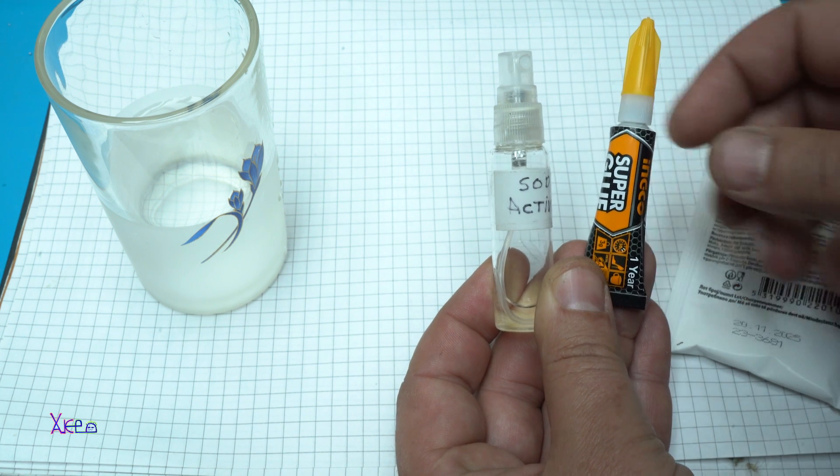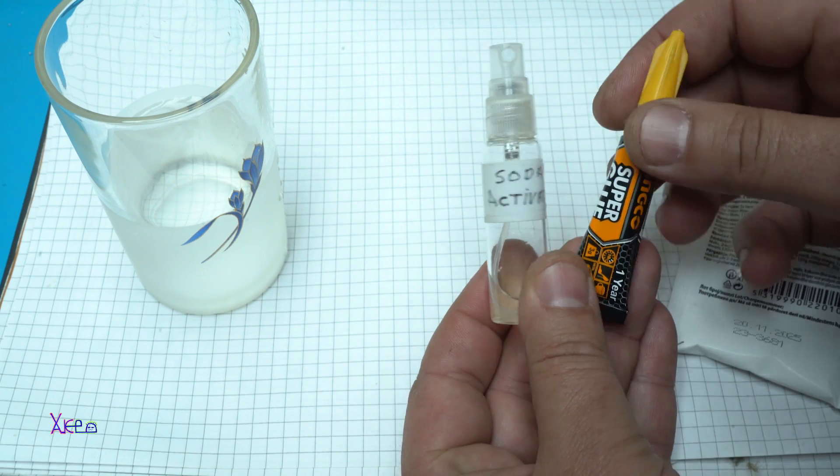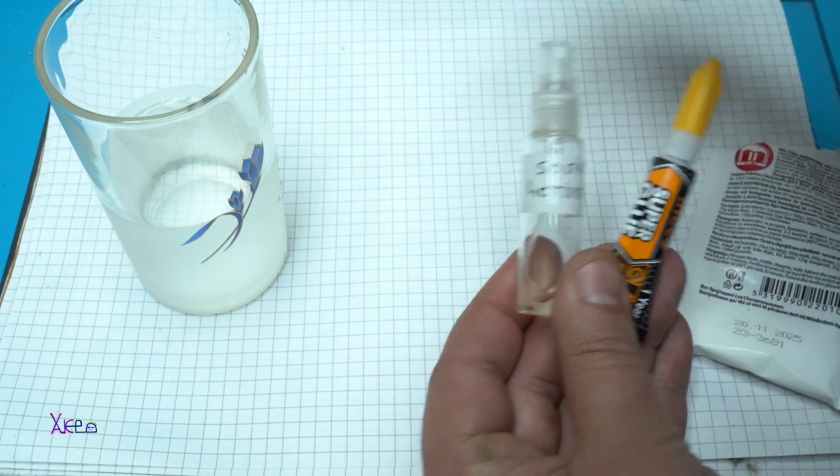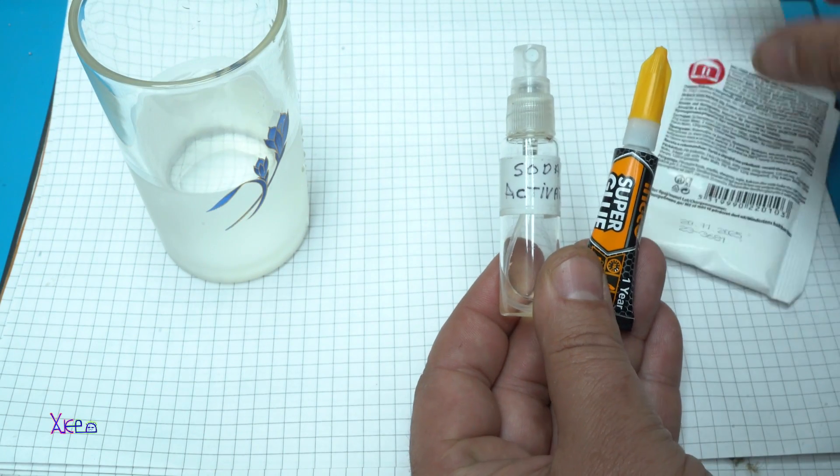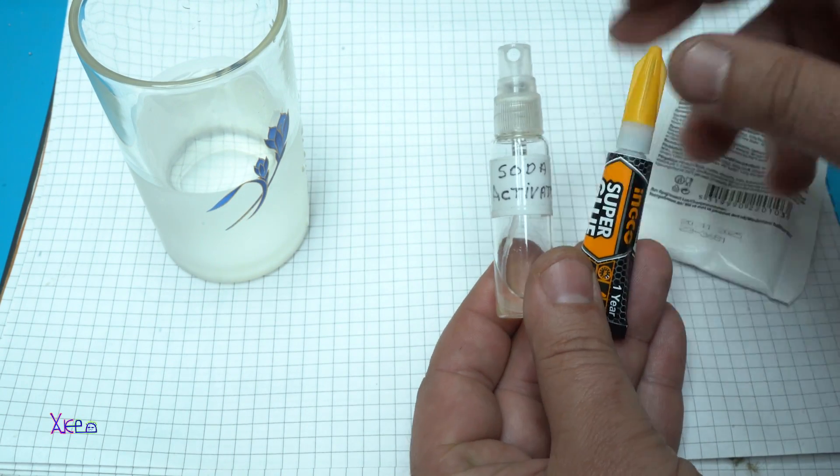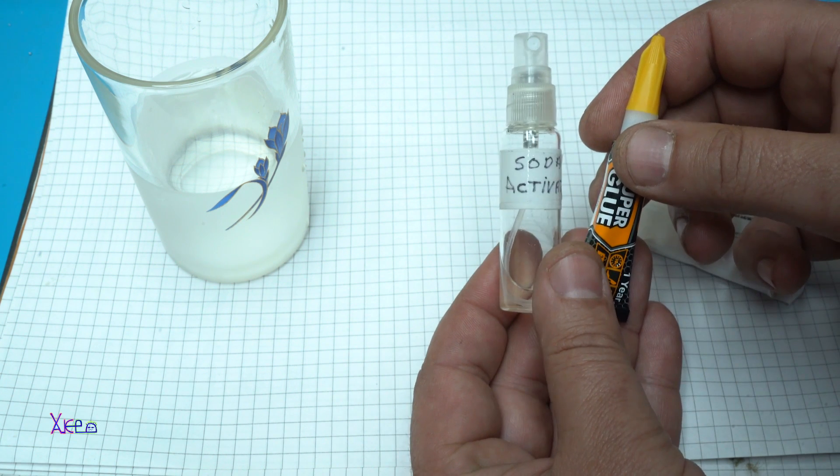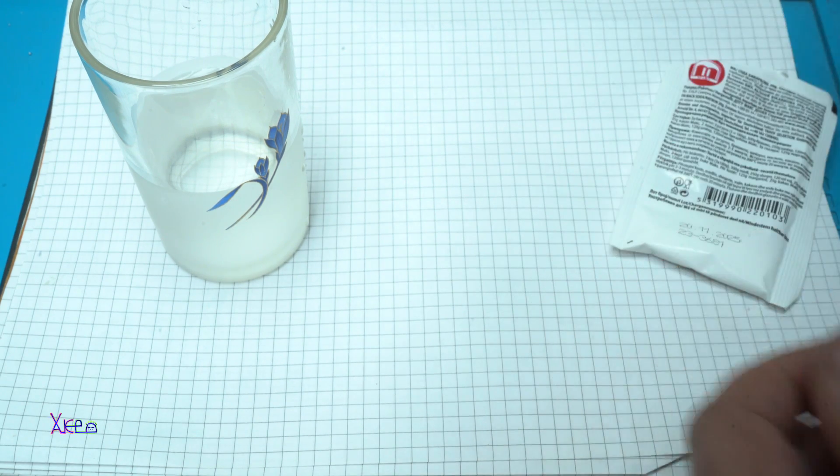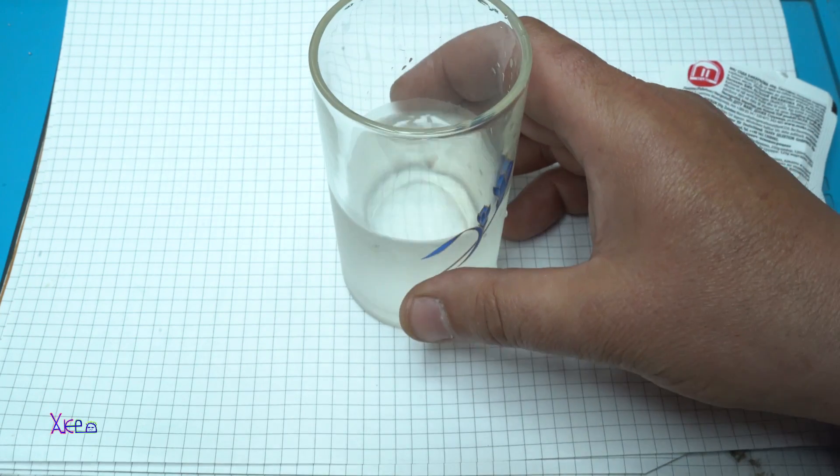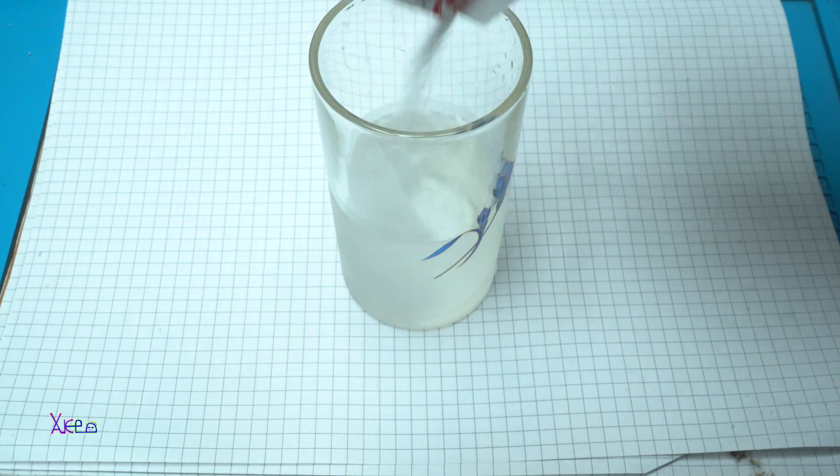So how to make a super glue activator. For making it you will need only pure water and baking soda. Mixing these two components will make the activator for super glue. Let's make it. You take the water, pour soda into the water.